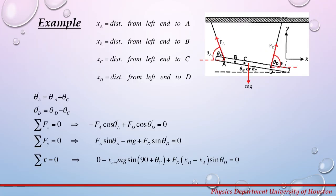Now we will move on to an example depicting the situation you will encounter during the experiment. You will have a torque bar inclined at angle θ_B or θ_C, which you will measure at the protractor at points B and C. Forces F_D and F_A will be measured on the spring, and the protractors at points D and A will show angles θ_D and θ_A. The distances from the left end to points A, B, C, and D are labeled X_A, X_B, X_C, and X_D.